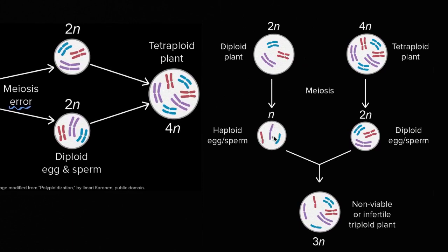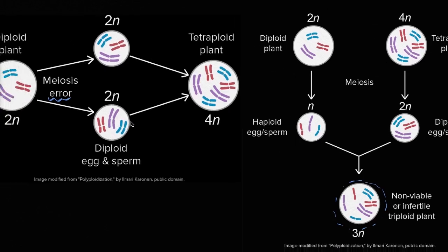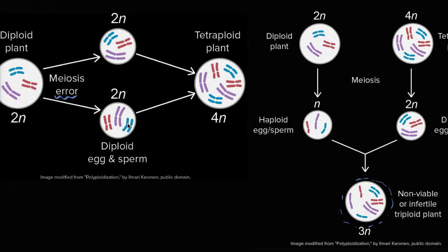So all of a sudden this tetraploid plant represents speciation — it could be viewed as a new species. You could think about things like this as a potential mechanism, and while we don't understand all of it or how all of the speciation we now observe has occurred, you can even imagine this being a mechanism for why you see an increase in the number of chromosomes in certain species versus others. Hopefully this is starting to answer some questions — and hopefully even introduce more questions — because this is a very exciting topic about how we get new species from parent or ancestral species and the diversity of life.